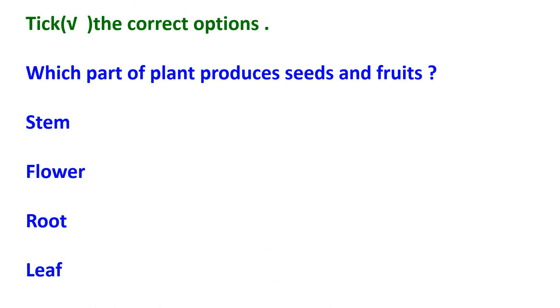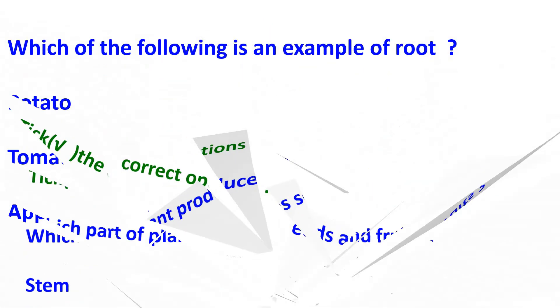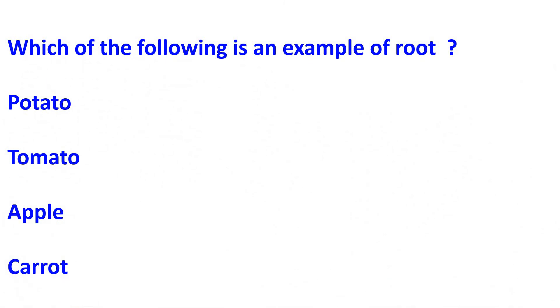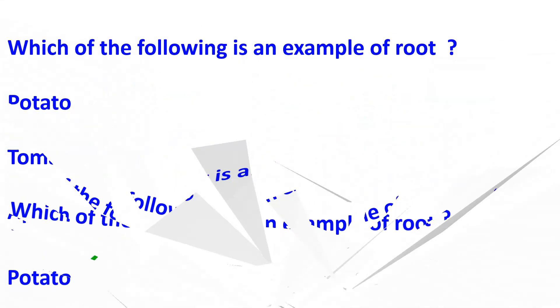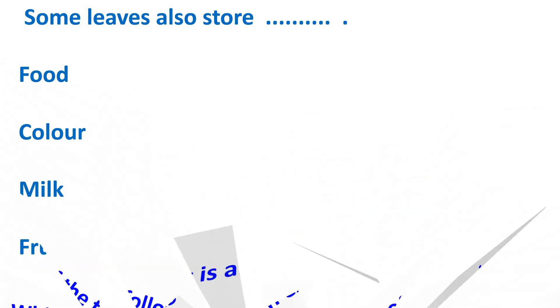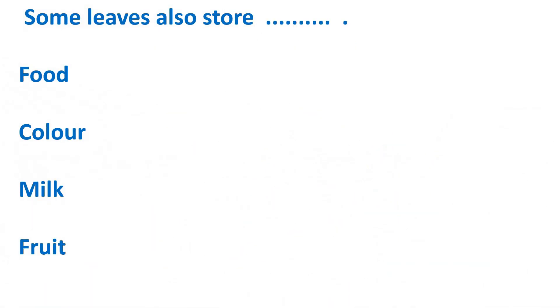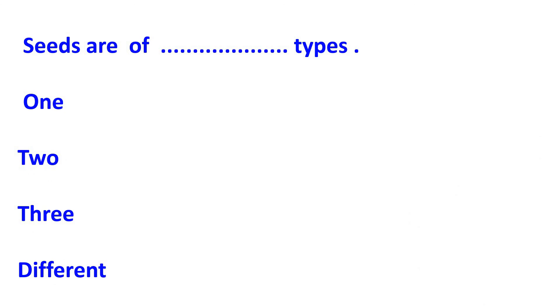Your first question is: which part of the plant produces seeds and fruits? Options are stem, flower, root, or leaf. The correct option is flower. Next question: which of the following is an example of fruit? Options are potato, tomato, apple, or carrot. The correct option is carrot. Next: some leaves also store blank. Options are food, color, milk, or fruit. The correct option is food. Next: seeds are of blank types. Options are 1, 2, 3, or different. The correct answer is different.